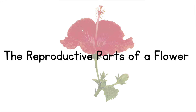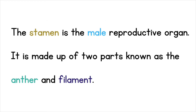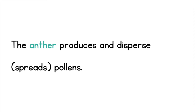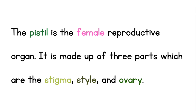The reproductive parts of a flower are: 1. Stamen and 2. Pistil. The stamen is the male reproductive organ. It is made up of two parts, which are known as the anther and filament. The anther produces and disperses or spreads pollens, while the filament is a slender stalk that supports the anther.